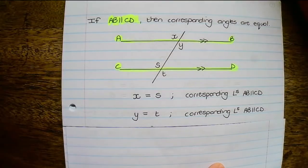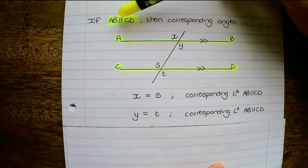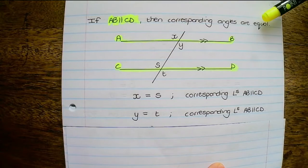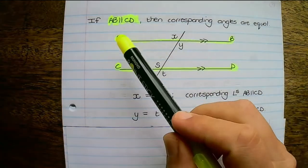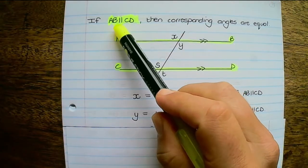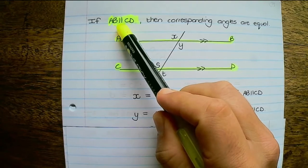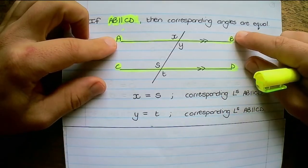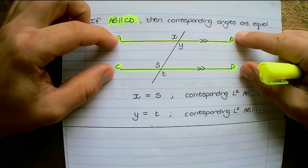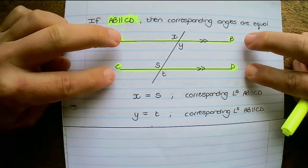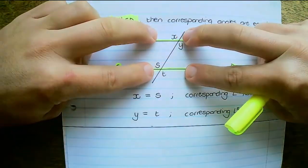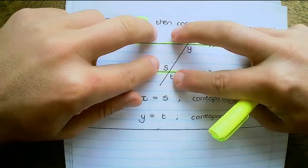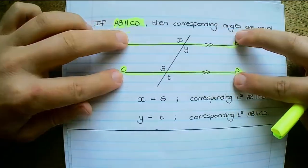Next up, if line AB is parallel to line CD then the corresponding angles are equal. Let's talk about this notation — this symbol denotes parallel lines. It means that line AB is parallel to CD, and lines that are parallel to each other are always the same distance apart.